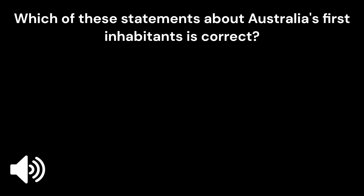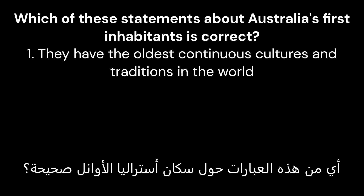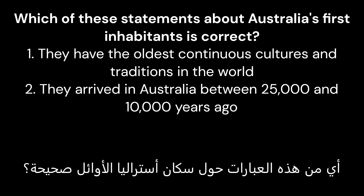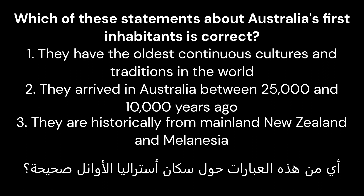Question 2: Which of these statements about Australia's first inhabitants is correct? Option 1: They have the oldest continuous cultures and traditions in the world. Option 2: They arrived in Australia between 25,000 and 10,000 years ago. Option 3: They are historically from mainland New Zealand and Melanesia. Correct answer is 1: They have the oldest continuous cultures and traditions in the world.